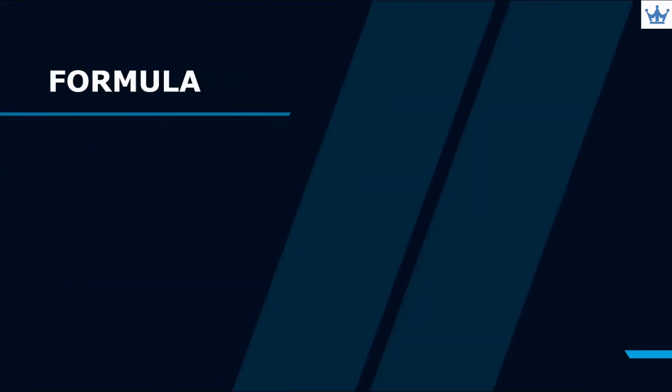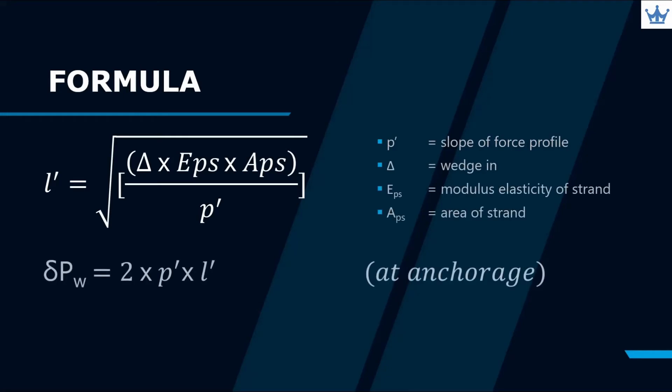Refer to the formula shown for wedge-in loss. We need to identify the L' due to wedge-in and the tendon slope of force. From there, we can find the loss of force due to wedge-in at anchorage and in any length within the L'.